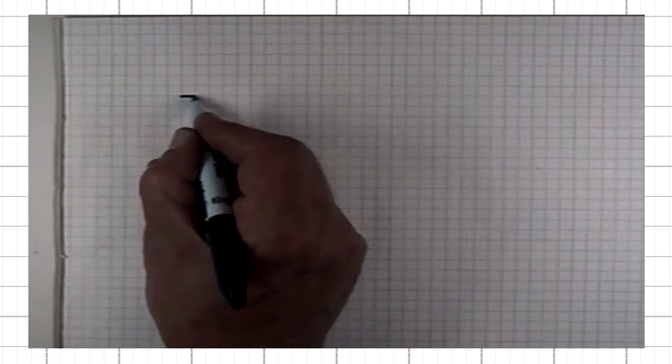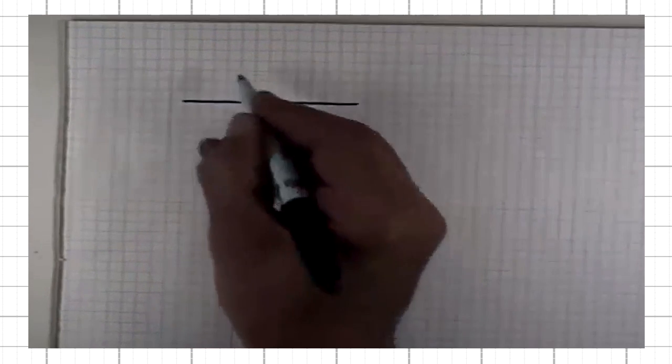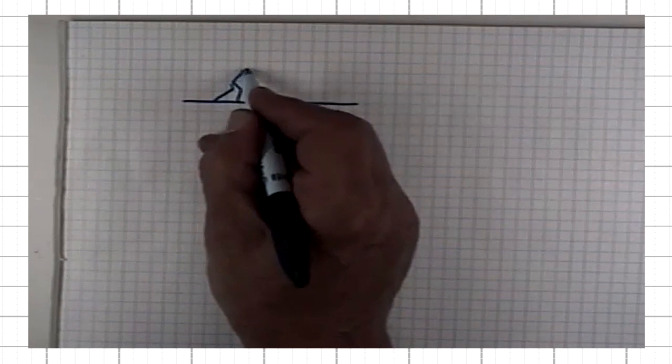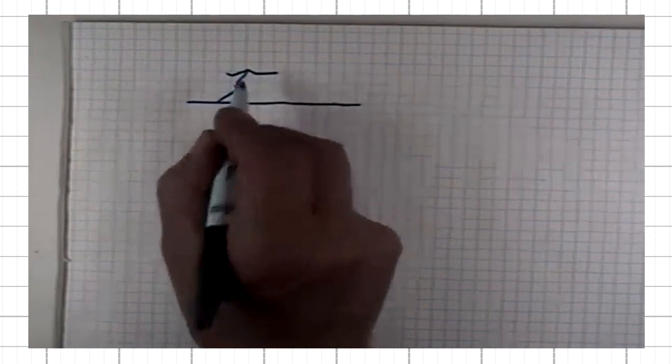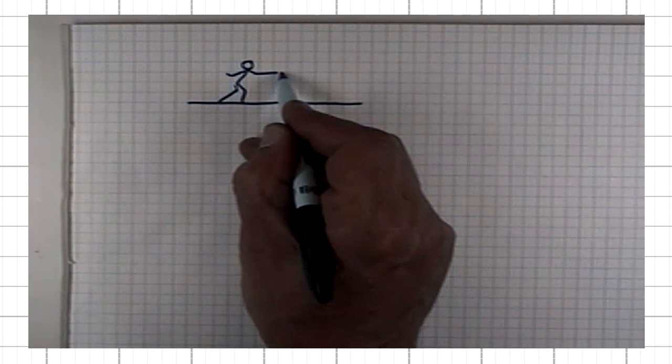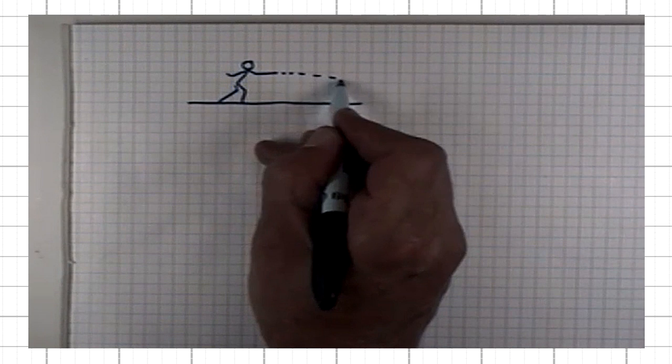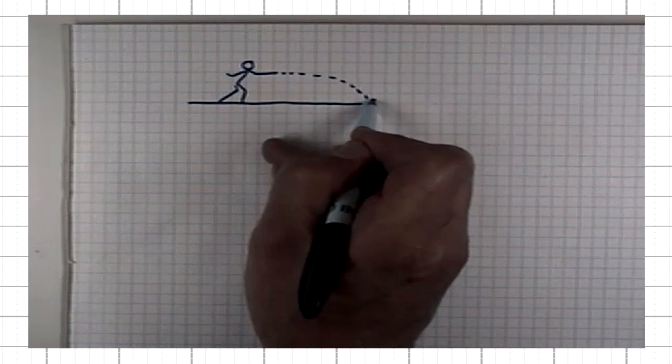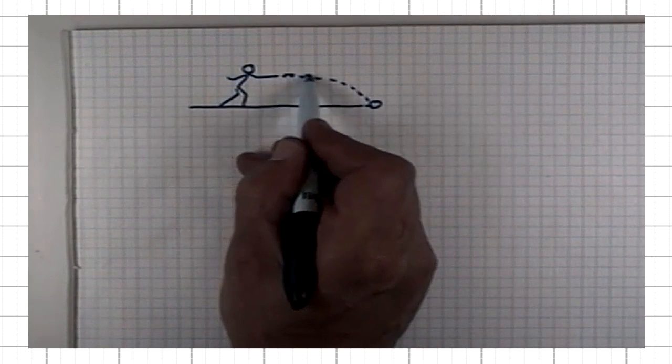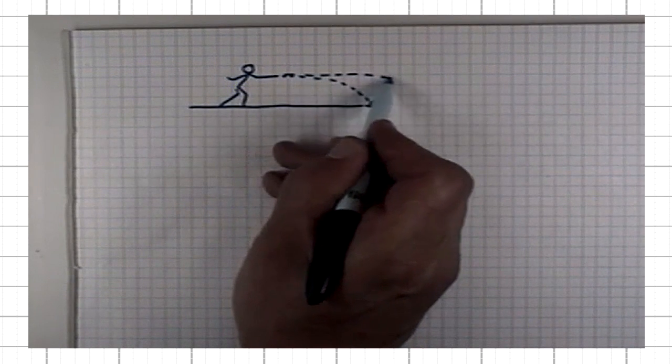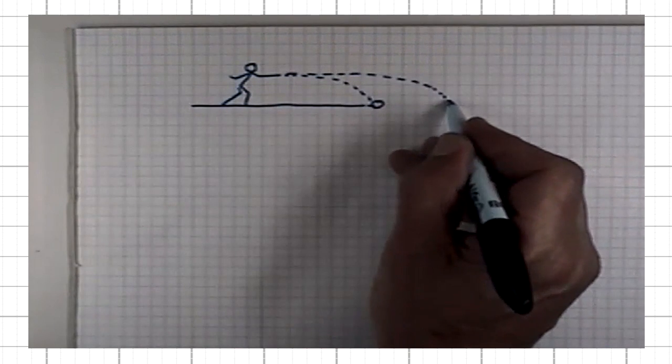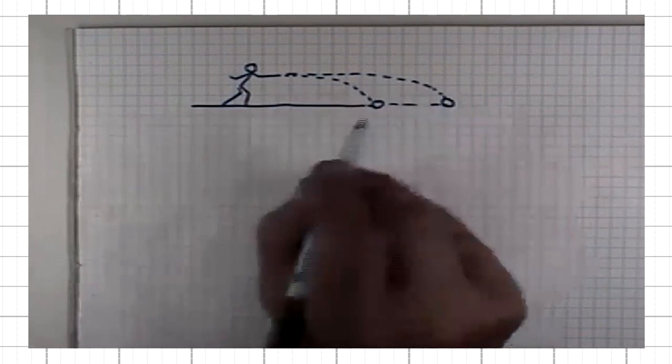You can make the same argument by a person throwing a ball. If you throw the ball with certain initial speed, it will travel some distance and fall down. If you throw it with a bigger speed, it would travel a longer horizontal distance, but would fall down and so on.